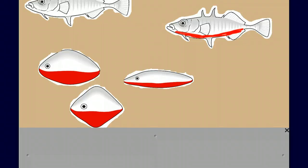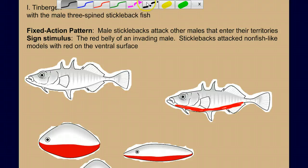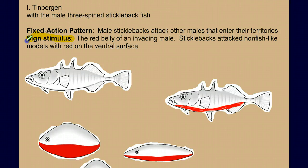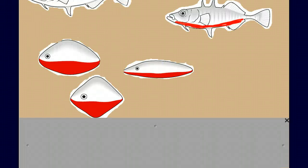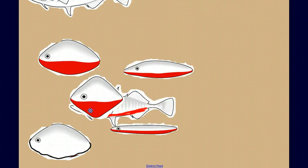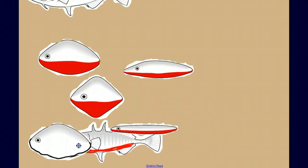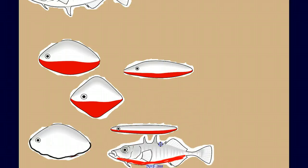The red underbelly is what we call the sign stimulus — the stimulus that sets off the fixed action pattern. To show it wasn't a fluke, the stickleback would attack a red-bellied model but ignore one without the red. As soon as you removed the red, it would ignore that model entirely.